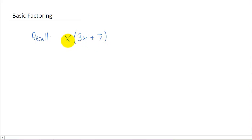Let's multiply out this x times this quantity 3x plus 7. The way to do this is you take the x and you distribute it through the parenthesis. What that means is you take x times 3x and you get 3x squared. Then you do 7 times x and you get 7x.